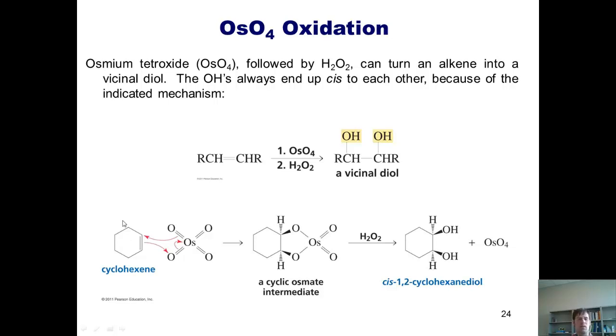Thus, if I begin with this starting alkene, cyclohexene, and treat it with osmium tetraoxide followed by peroxide quench, I get this cis-1,2-cyclohexane diol. So you should remember, once again, that this reaction always gives you the cis-1,2-diol. The mechanism shown here partially is interesting, but I do not require you to know it.